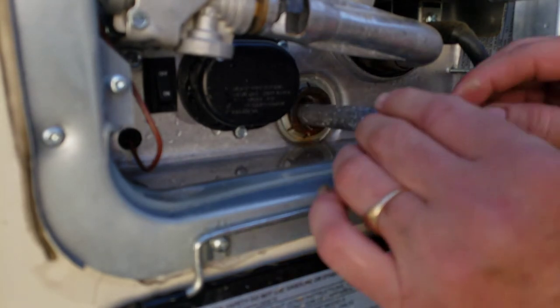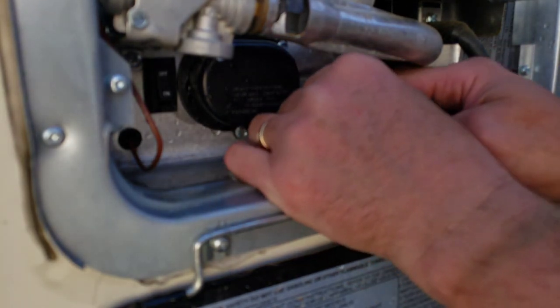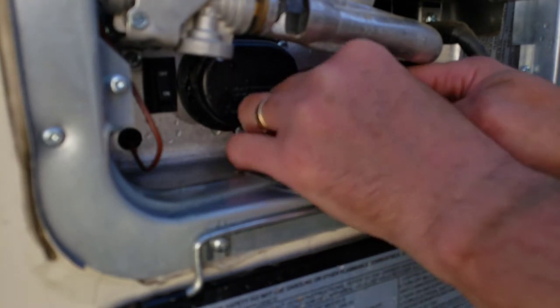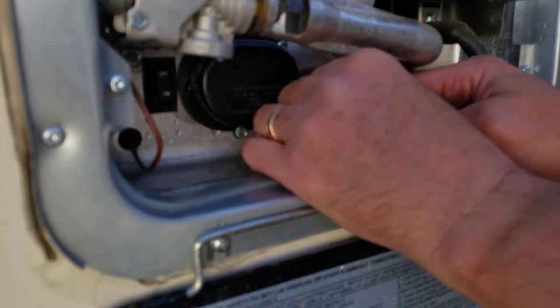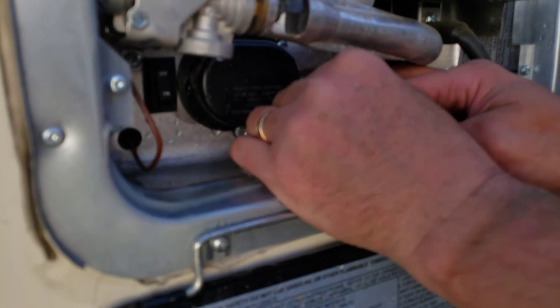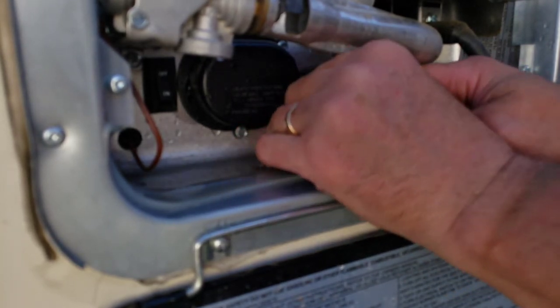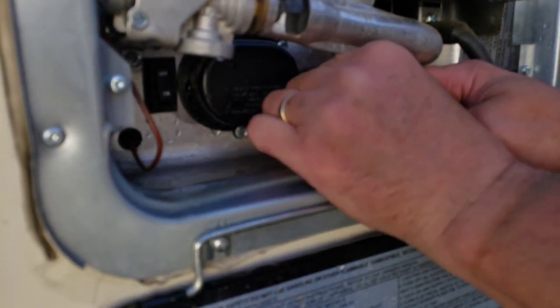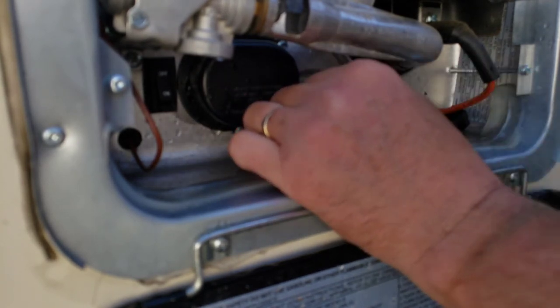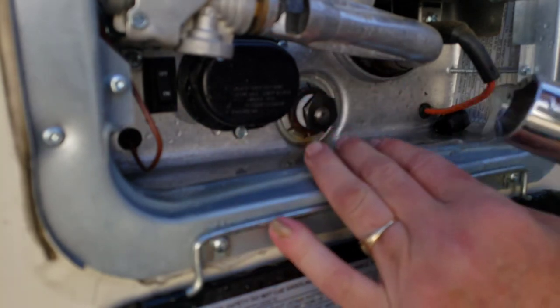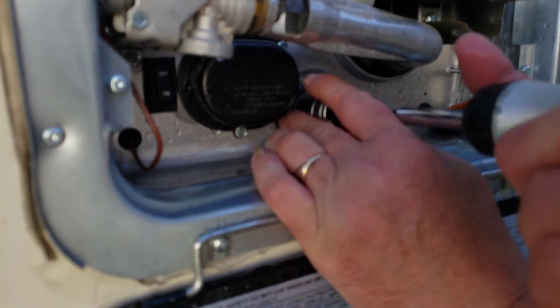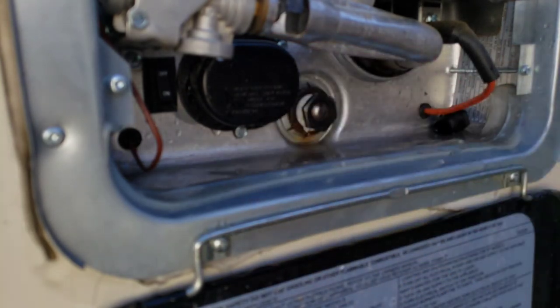So we're going to put the anode rod in. We're putting fresh Teflon on there. Now, these are kind of tricky, but if you balance it and kind of turn it with one hand, sometimes they go in easy and sometimes they don't. And I have a 1 and 1/16th socket on a little screwdriver here. It doesn't have to be, I mean, you don't want to crank it down, but that's all there is to it.